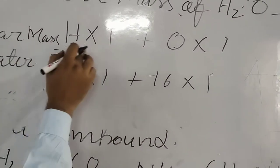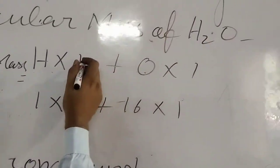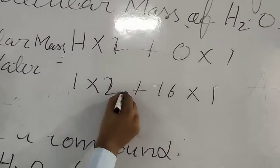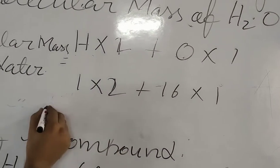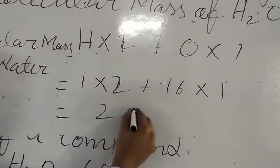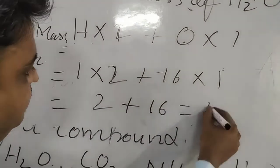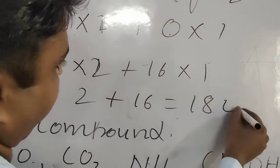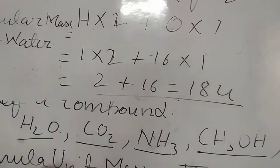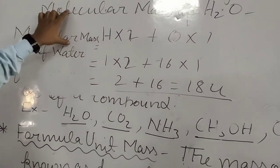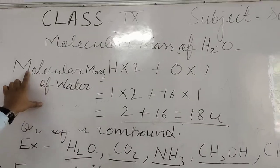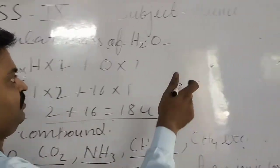In water, there are two hydrogen atoms. So you write two for hydrogen. Two plus 16 gives 18 U. So like this, you will get the molecular mass of water.